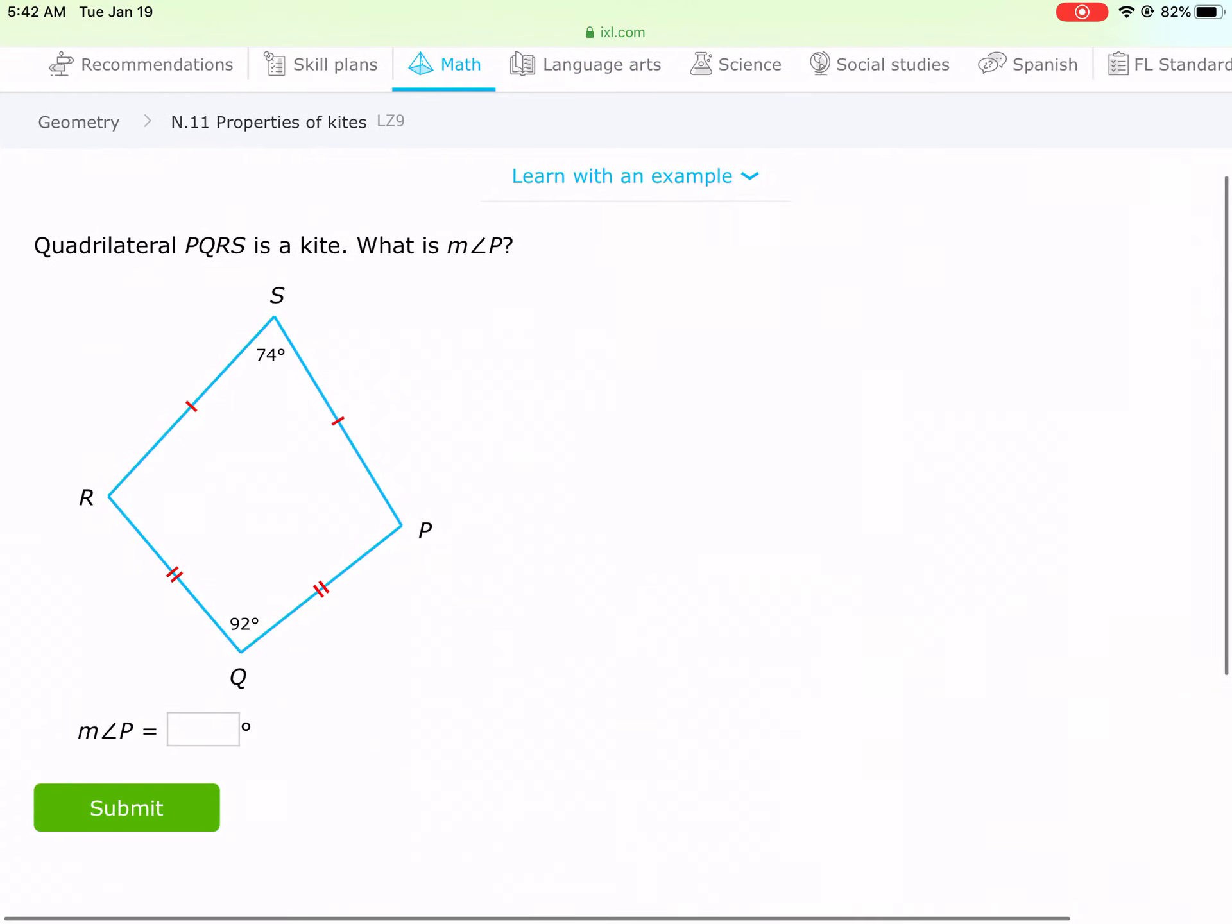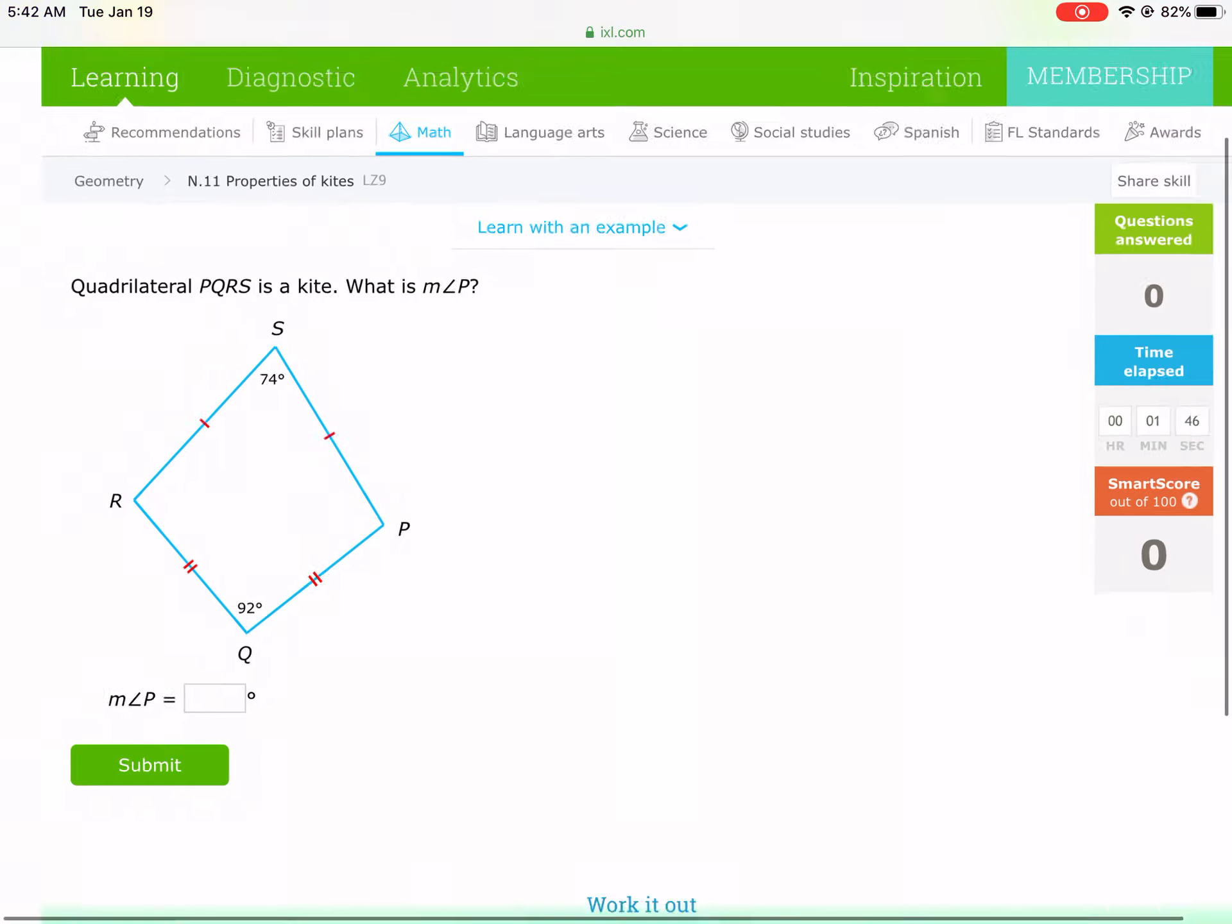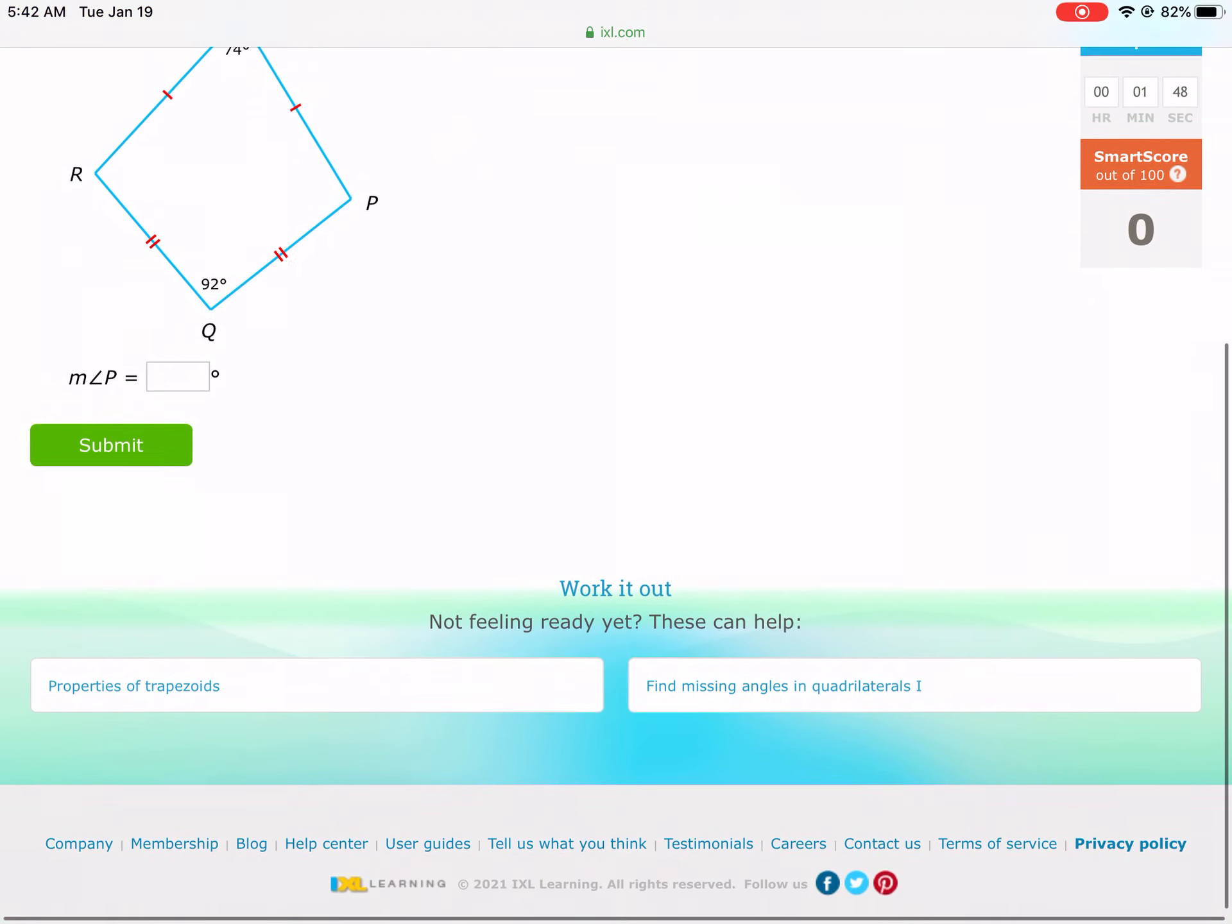So what we need to do here is, that's just one of the properties of kites. But one of the other cool things about kites is they have one set of opposite angles that are congruent. So R is going to be congruent to P. So what we need to do here is we simply need to do 360 subtract 74 subtract 92. Once we do that, we get 194.